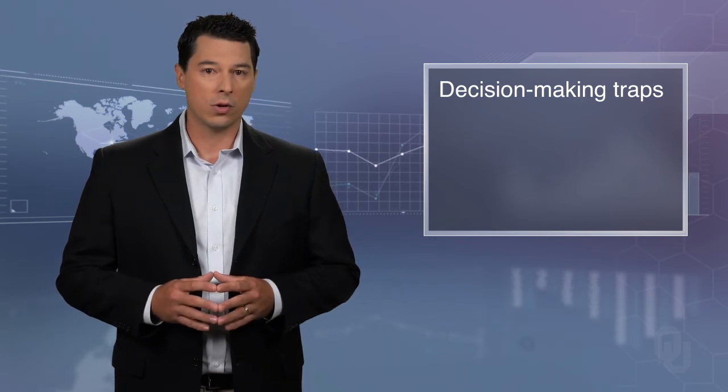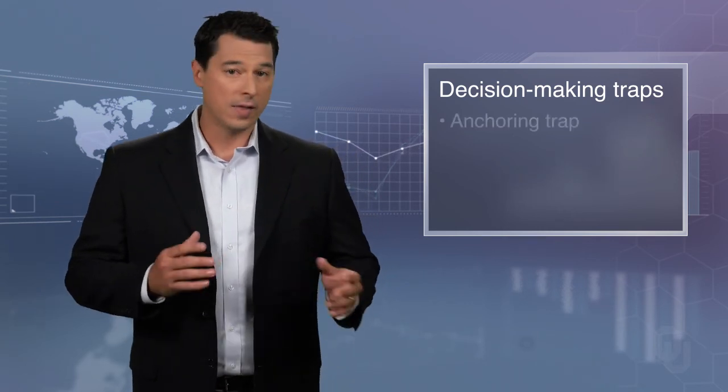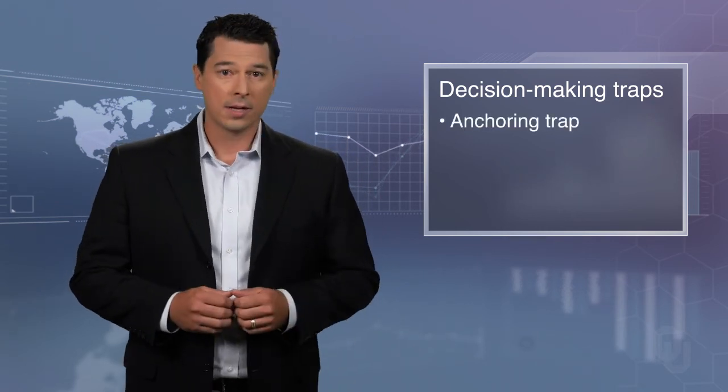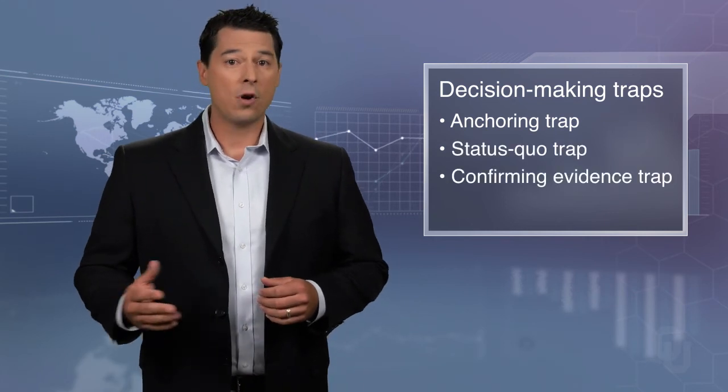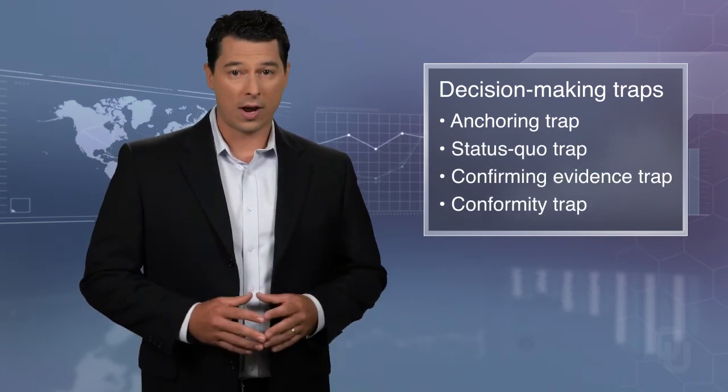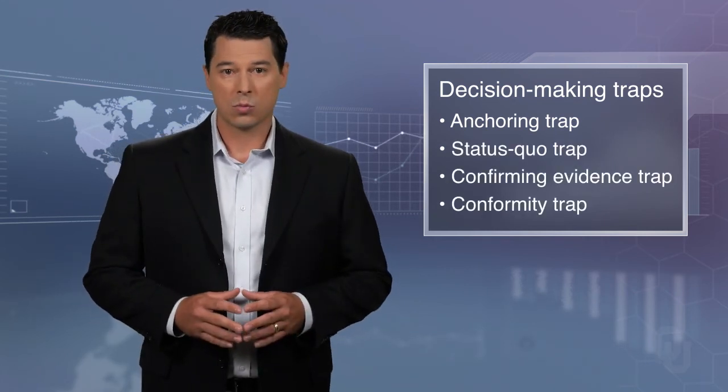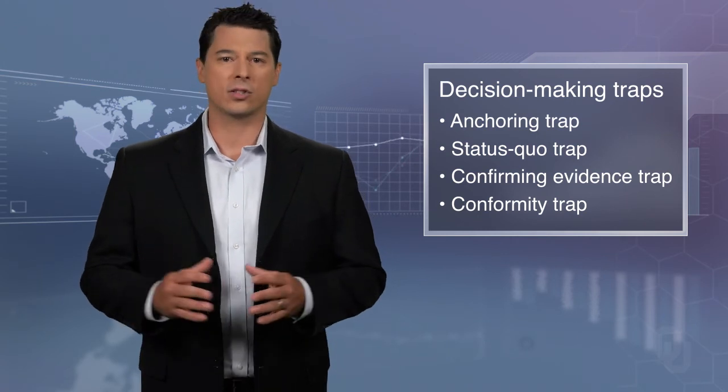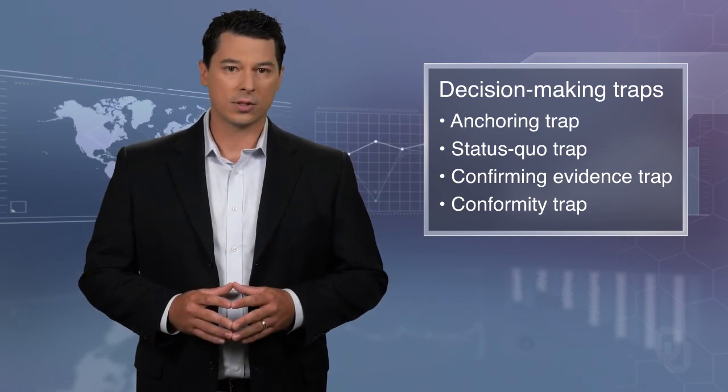So in this unit, we will also examine what are known as decision-making traps. An article in the Harvard Business Review identified multiple hidden traps which can inhibit you from making the right decision. We will discuss several of these, including the anchoring trap, the status quo trap, the confirming evidence trap, and the conformity trap. We will also think about ways to protect ourselves from falling into these traps.